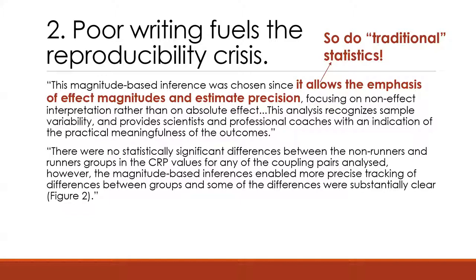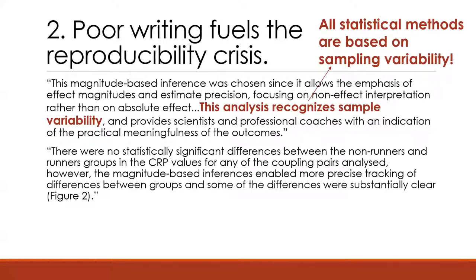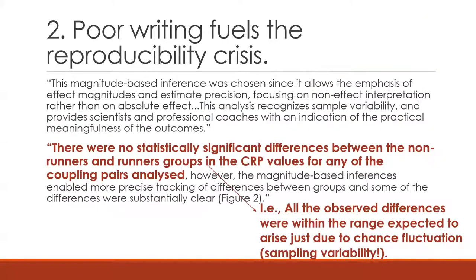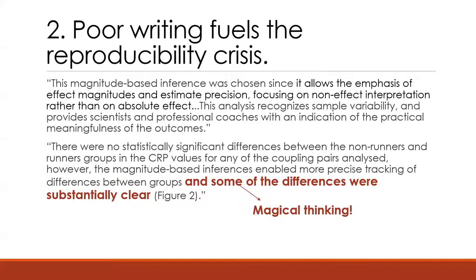There's a lot in there that is totally nonsensical. They say the method is better because it 'allows the emphasis of effect magnitudes and estimate precision' — well, traditional statistics do that too. 'This analysis recognizes sample variability' — all statistical methods recognize sample variability. They didn't find any statistically significant results, meaning all the observed differences were within the range you'd expect from chance fluctuation. But then they said their method 'enabled more precise tracking of differences between groups and some differences were substantially clear.' How do you get more out of the data just by switching your method? You can't. All of that is buried in nonsensical writing that kind of sounds scientific and sounds good.